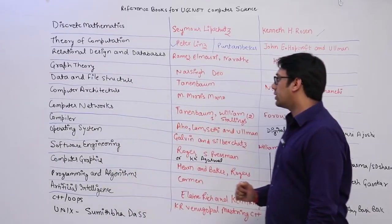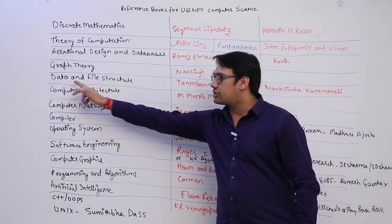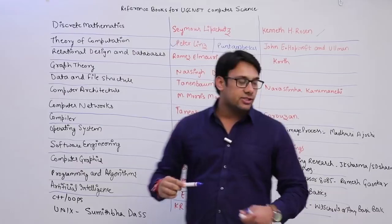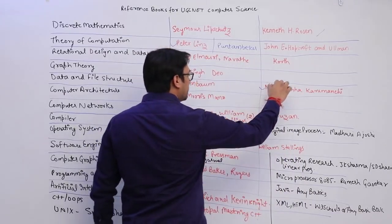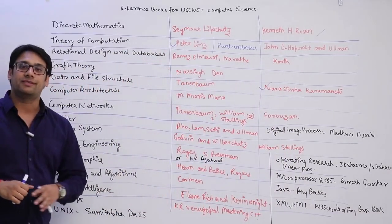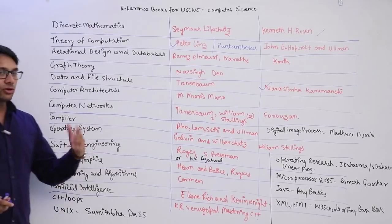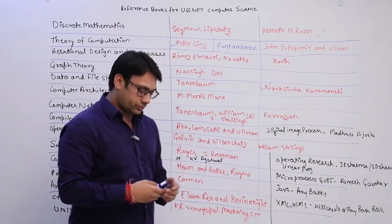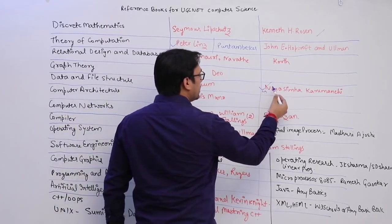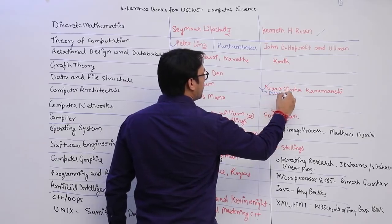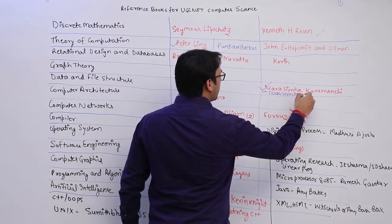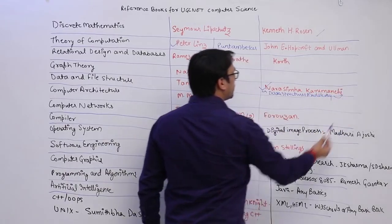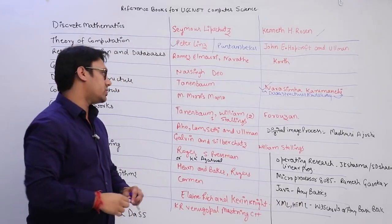For Data Structures — or Data and File Structures — there are two books: Tenenbaum and Narasimha Karumanchi. Personally I feel Narasimha Karumanchi is the better book for Indian competitive examinations, whether you are preparing for GATE or UGC. You can buy either 'Data Structures Made Easy' by Narasimha Karumanchi or 'Data Structures for GATE' by Narasimha Karumanchi — both are really good.